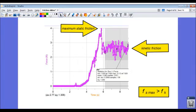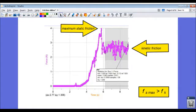But what we see is that the kinetic frictional force is less than the maximum static frictional force, and that's always going to be true. So friction depends upon two main things: what are the two surfaces in contact with one another—what are they made out of—and how hard are they being pressed together?